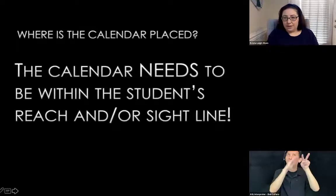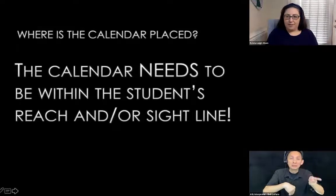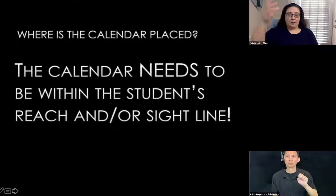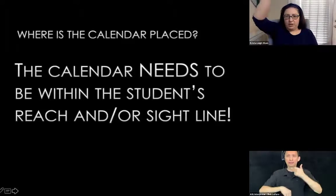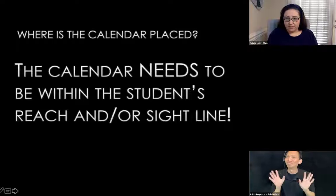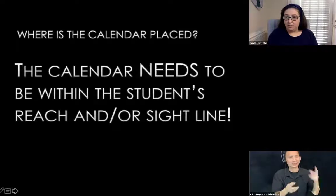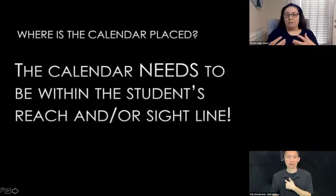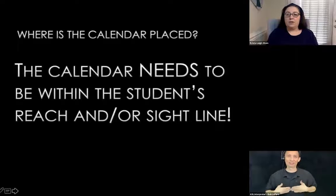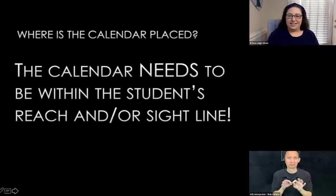Where is the calendar placed? The calendar needs to be within the student's reach and/or sightline. Sometimes we set up a calendar system and things are too high for the kid to reach. As a parent, it's easy to do things for a kid rather than having them be part of the process. But for these purposes, kids need to be in the process — whatever level of participation we can get, we want. It needs to be where they can see it or touch it or both. We should not be removing the items for them unless they need that level of physical assistance.